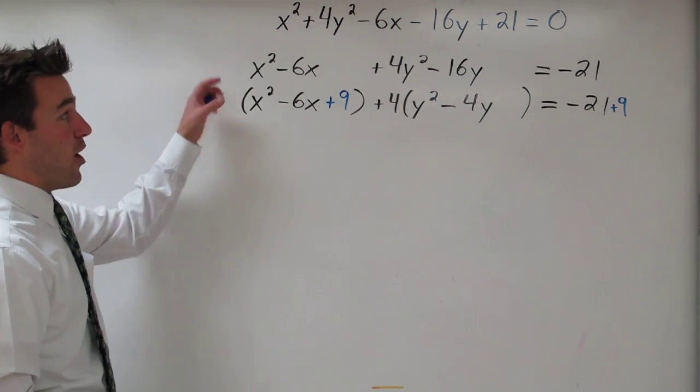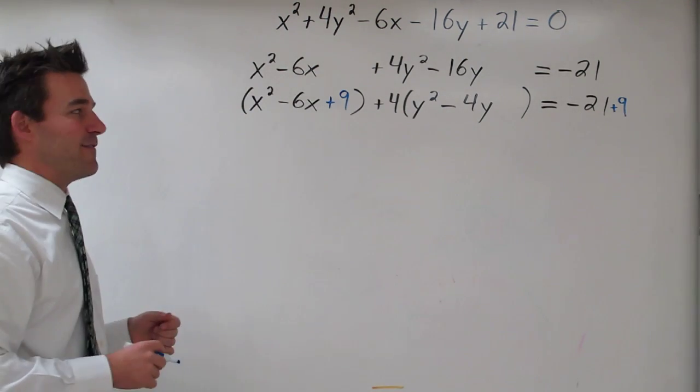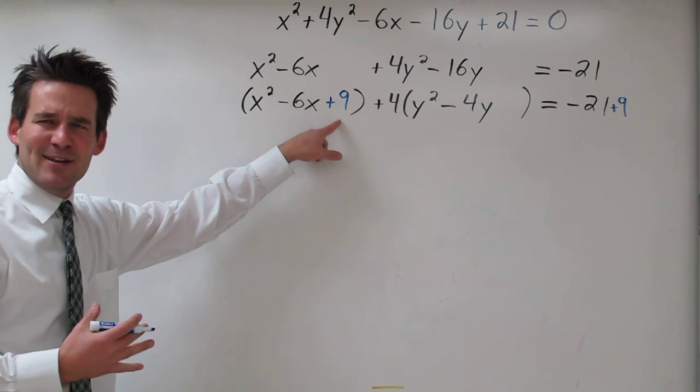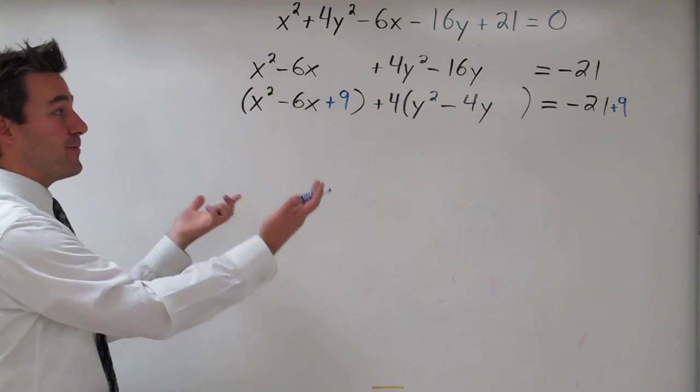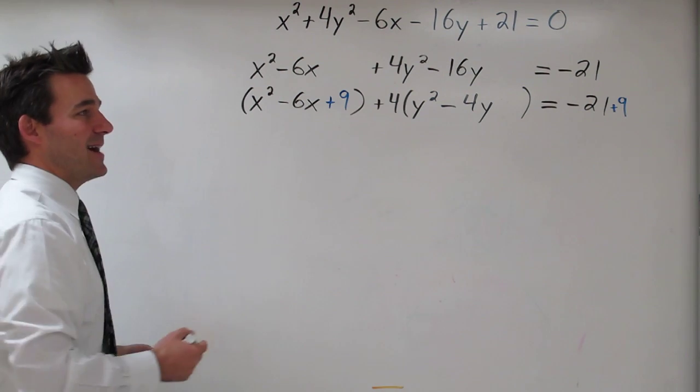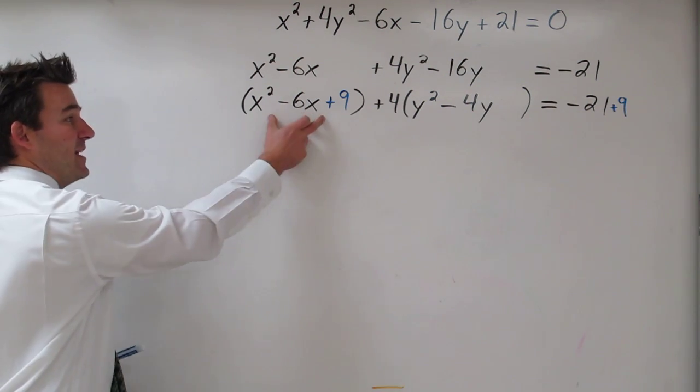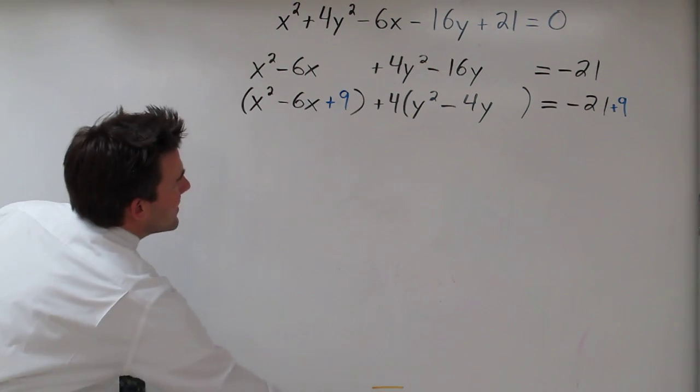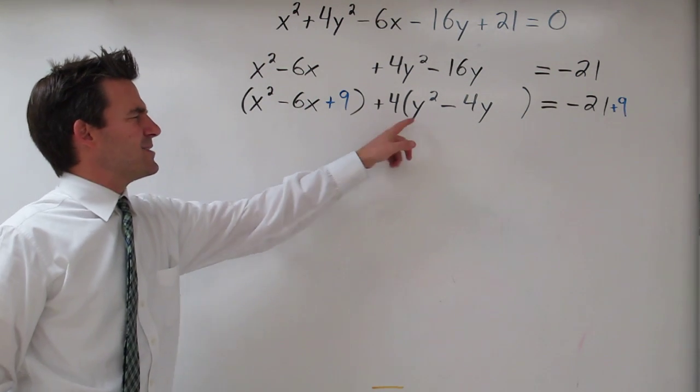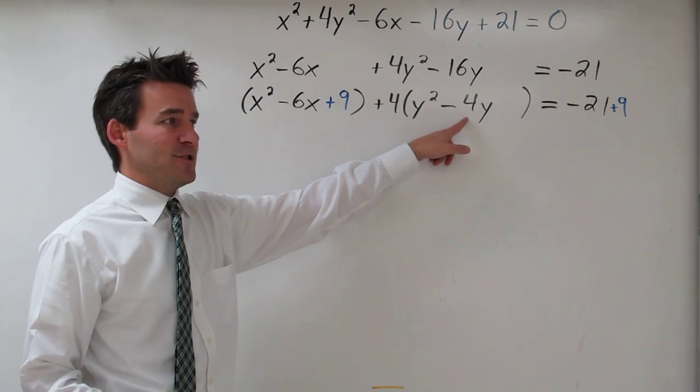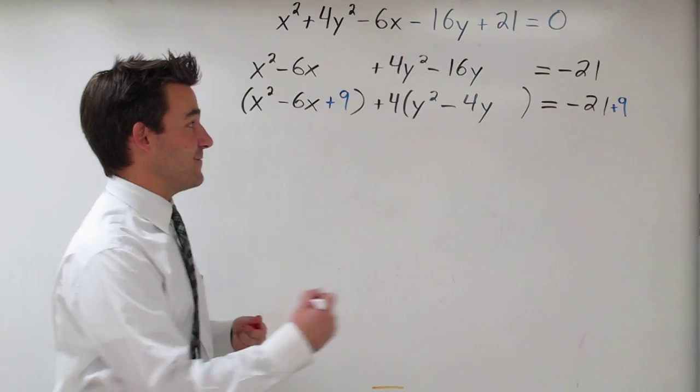Up until this step, all I've done is moved things around and factored. But when I added 9 to the equation, I actually changed it. So to keep the whole equation balanced, I added 9 to the other side. So I've completed the square here. Now as far as y is concerned, half of negative 4 is negative 2. Square that, you get positive 4.